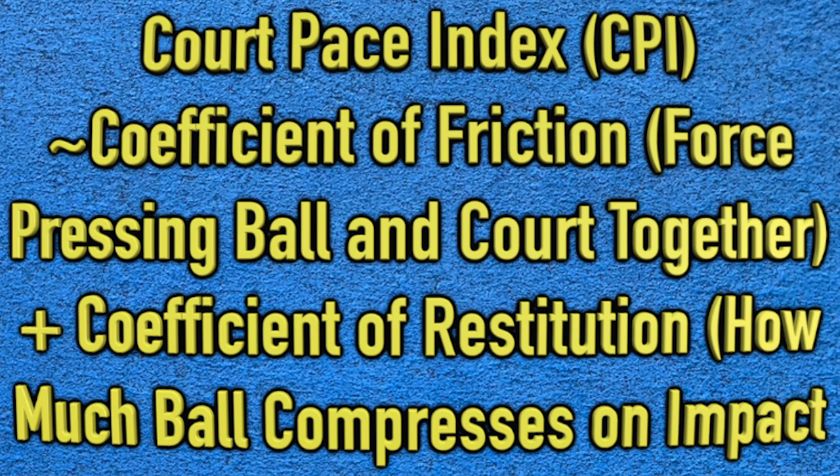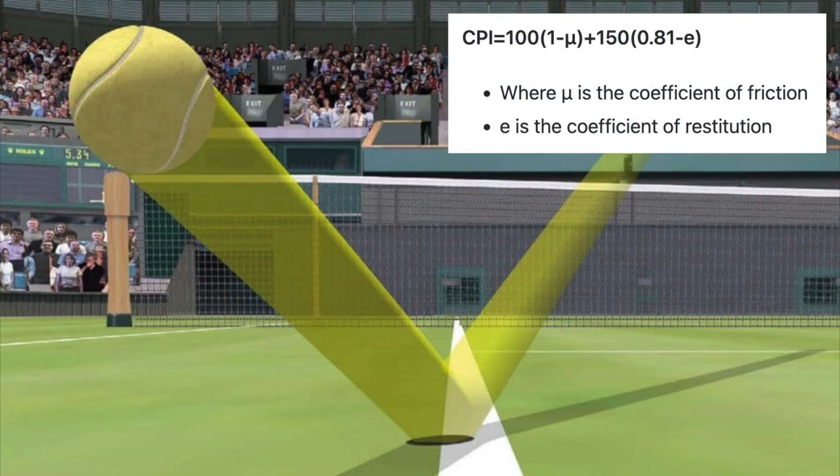So what is Court Pace Index? Essentially, CPI is calculated from the coefficient of friction — the force pressing the ball and the court together — and the coefficient of restitution, which is how much the ball compresses on impact. This is the mathematical equation for CPI. In the formula, U is the coefficient of friction and E is the coefficient of restitution.